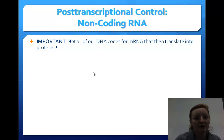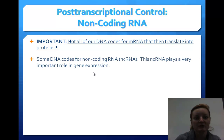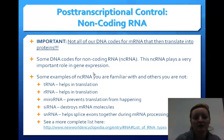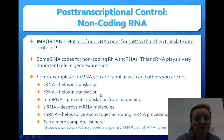Not all of our DNA codes for mRNA and then translates into protein. Some DNA codes for non-coding RNA, which plays a very important role in gene expression. Examples are tRNA, which helps in translation but doesn't code for a protein, and rRNA, which also helps with translation but doesn't code for a protein.